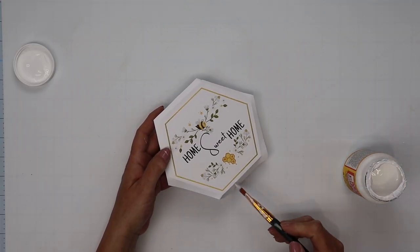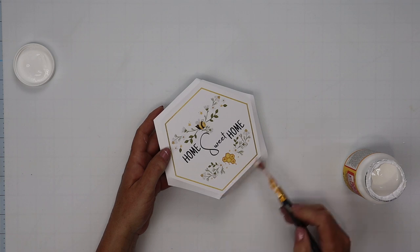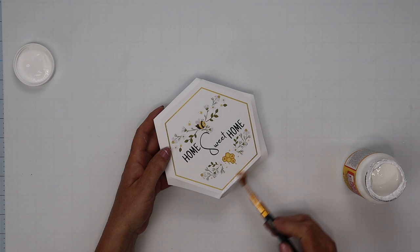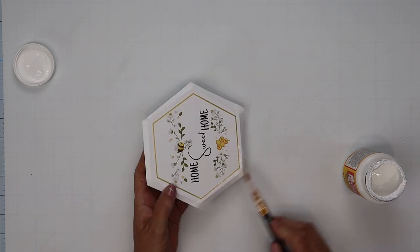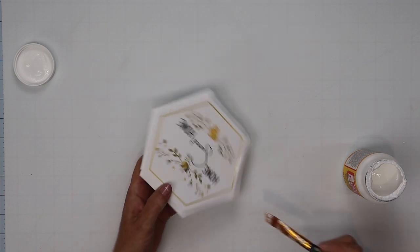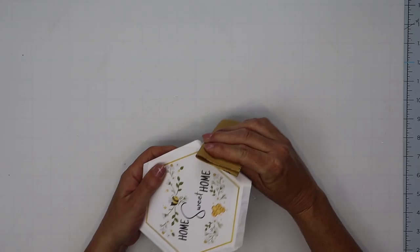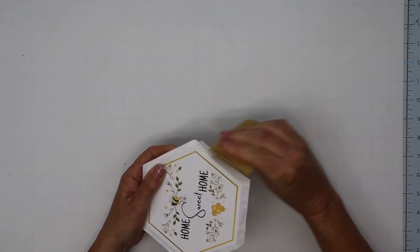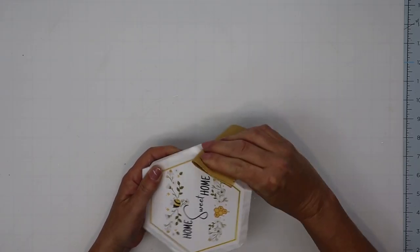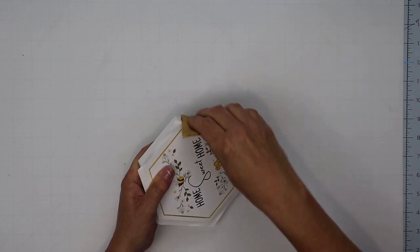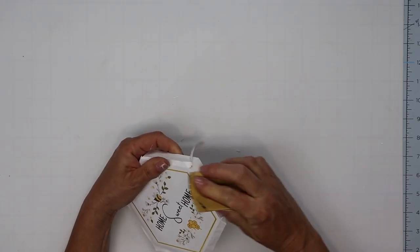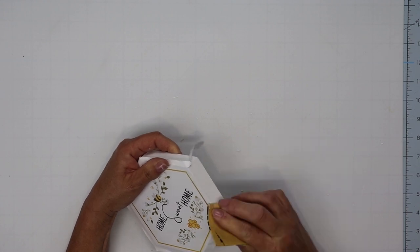Once that dried, I went around just the edging itself with the Mod Podge because I want to make sure the paper doesn't tear. And because I use just a regular printer, I don't want to go over top of my image with the Mod Podge because it'll make the ink bleed. Once that dried, I took a piece of fine grit sandpaper and went around the edging in one direction to remove all of the excess paper on the edges.